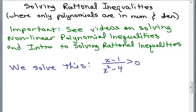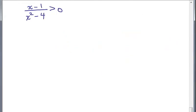Alright, we're going to solve this rational inequality on this video. Make sure you already know how to do the nonlinear polynomial inequalities and that you've seen my introduction to solving rational inequalities. So here's our problem: (x - 1) over (x² - 4) is greater than 0.